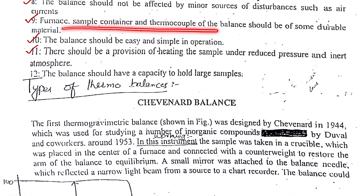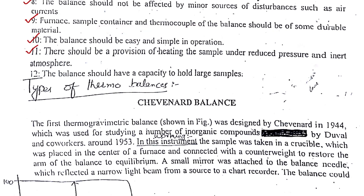The furnace, sample container, and thermocouple of the balance should be made of durable material. Since we are heating at very high temperatures, both the sample container and thermocouple should retain their characteristics — they should not melt or contaminate our sample, and should have good resistance to high temperatures. The thermocouple is used to measure the exact temperature of the sample.